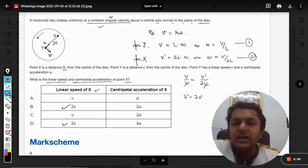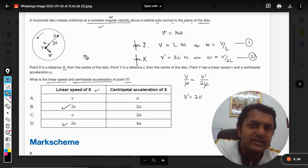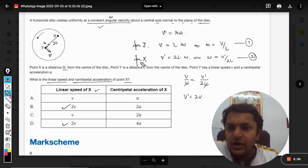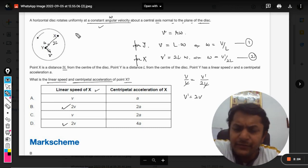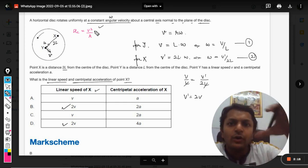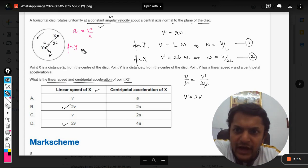Now the second part is what will be the centripetal acceleration. The centripetal acceleration formula is given by v square by r, that's the formula. And now we are going to put the values.